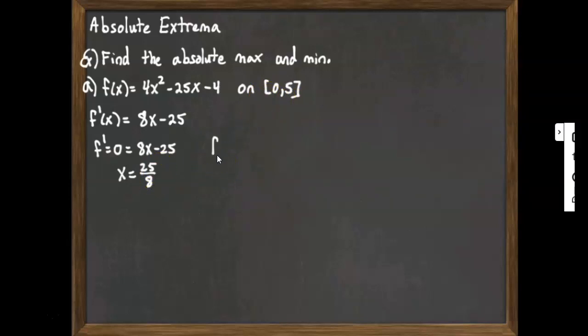We also have to ask, when is f prime undefined? But that doesn't happen here. It's a polynomial, 8x minus 25, and that's defined for every value of x. So there's no situation where we might be dividing by 0 that we'd have to be worried about here. And so therefore, we only have one critical point, one place where the derivative is equal to 0.